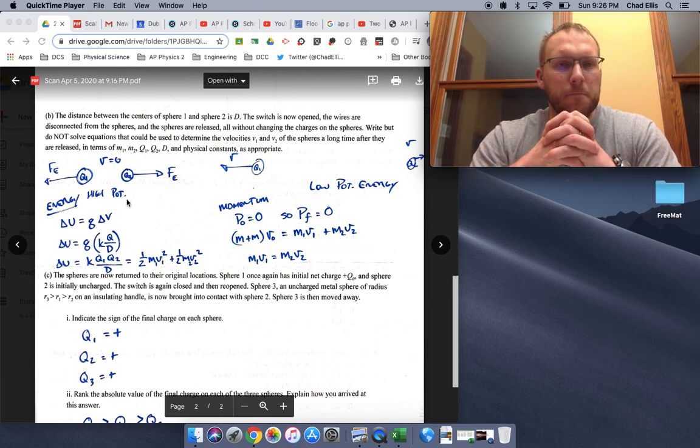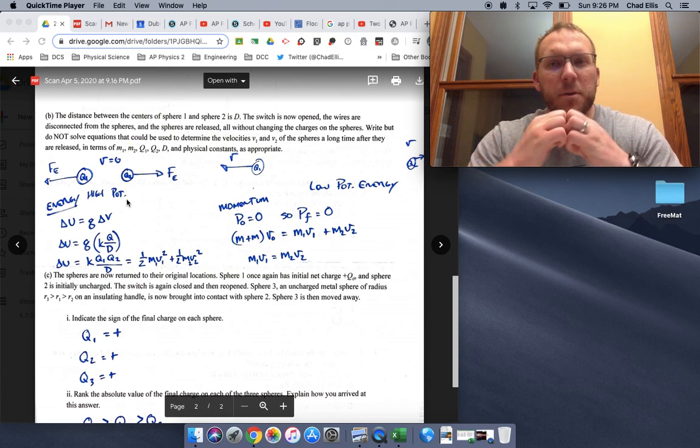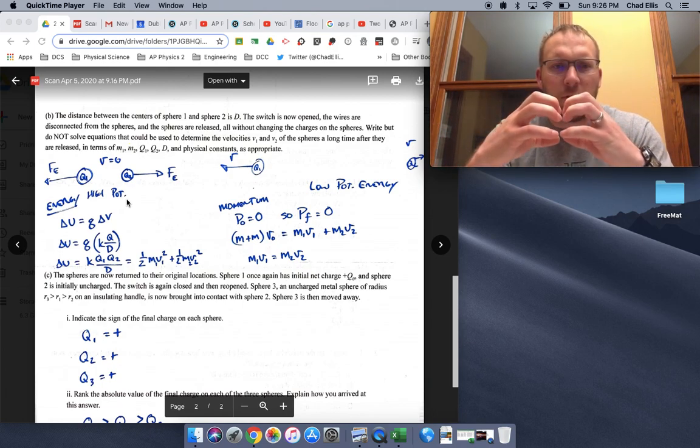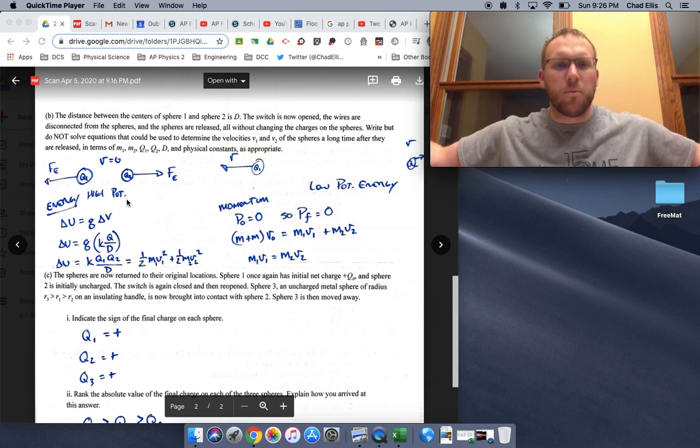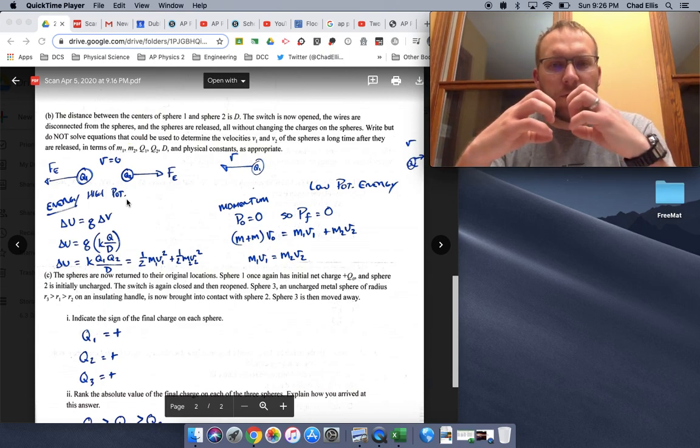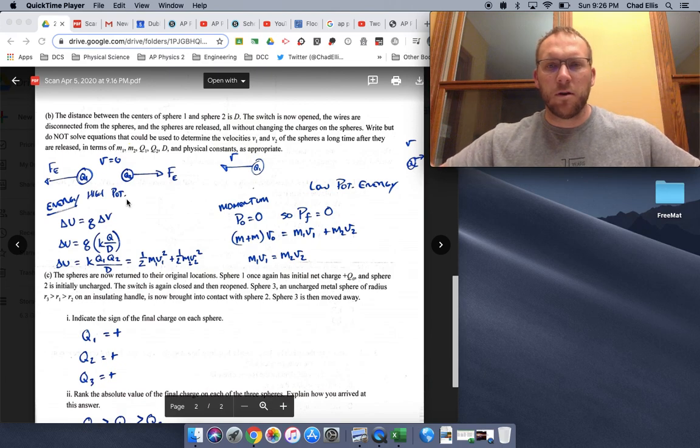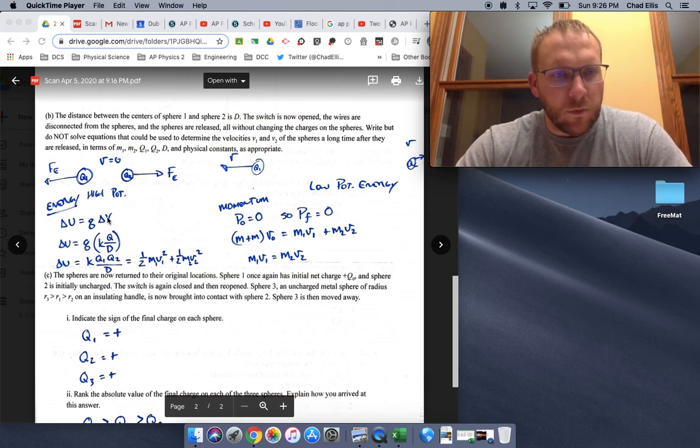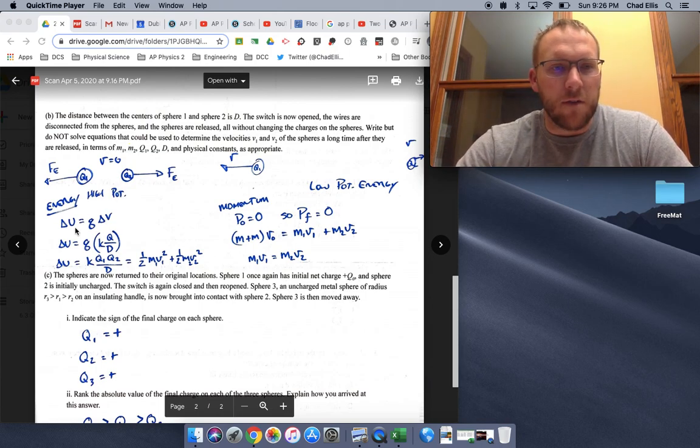Where basically if things have the potential for something to happen, as we remove those closer and closer, it's going to be more and more that they want to push each other apart. So that's a high potential energy as they move apart, that's going to be a low potential energy situation. In terms of energy, how can we think of that?